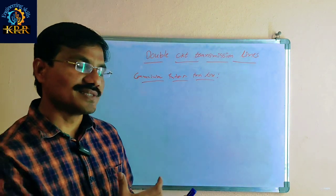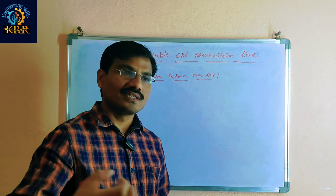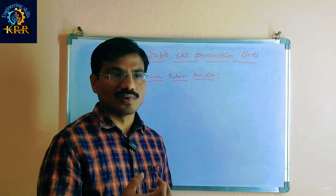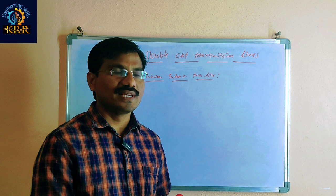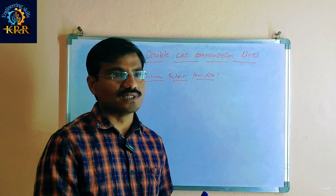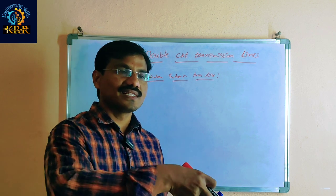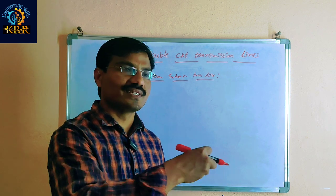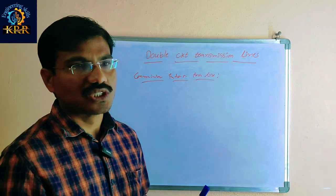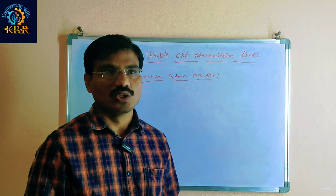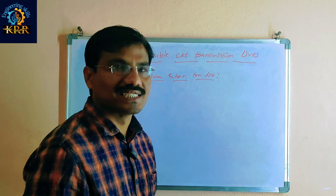Basically, the transmission line is traveling some hundreds of kilometers. In between, some communication lines also are there. These transmission lines interfere with the communication lines. What will happen? We are discussing.